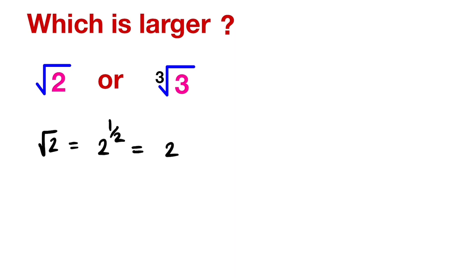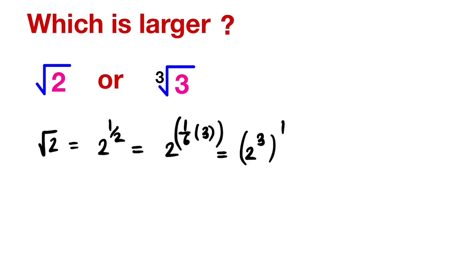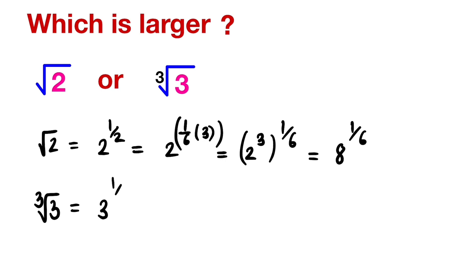This equals 2 cubed, all raised to 1 by 6, which equals 8 raised to 1 by 6. Now cube root 3 equals 3 raised to 1 by 3, and we write this as 3 raised to 1 by 6 times 2.